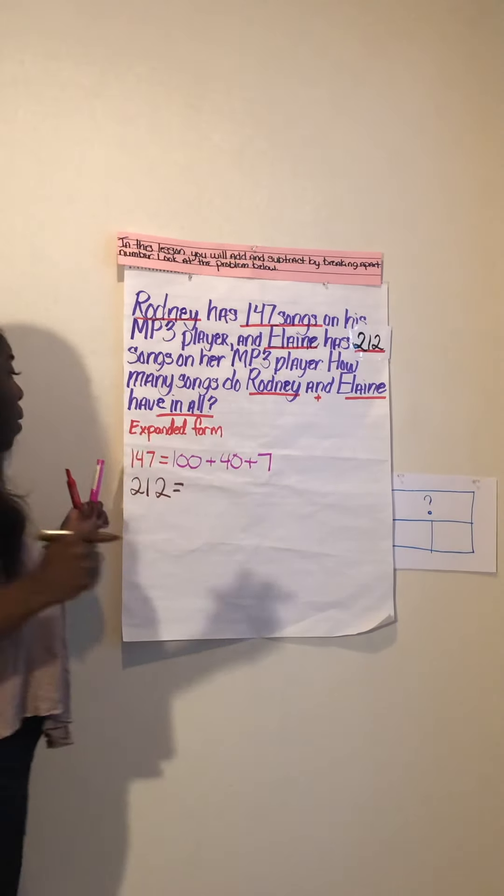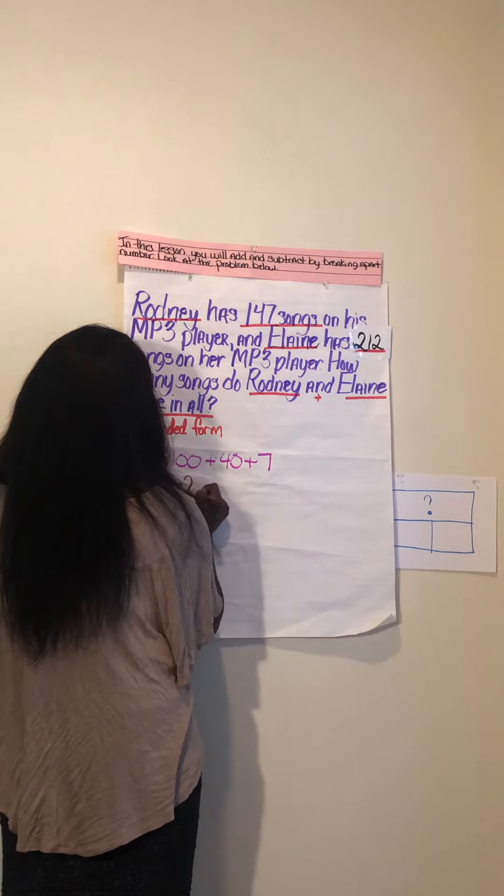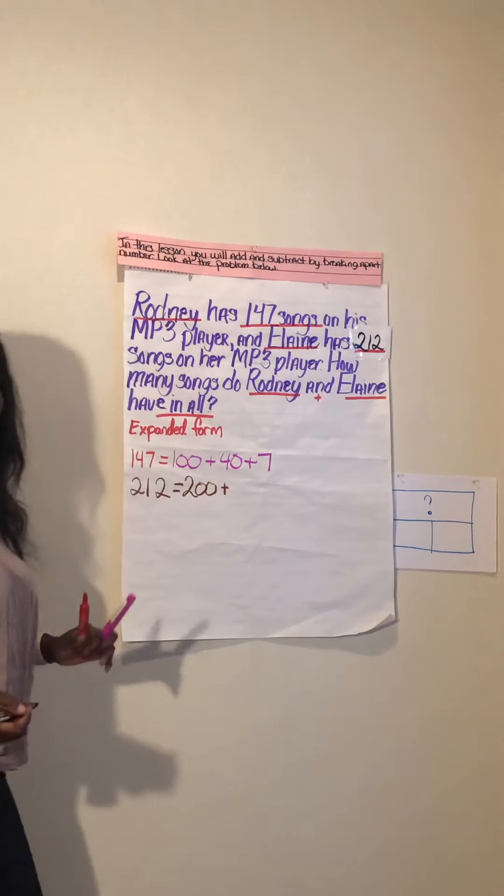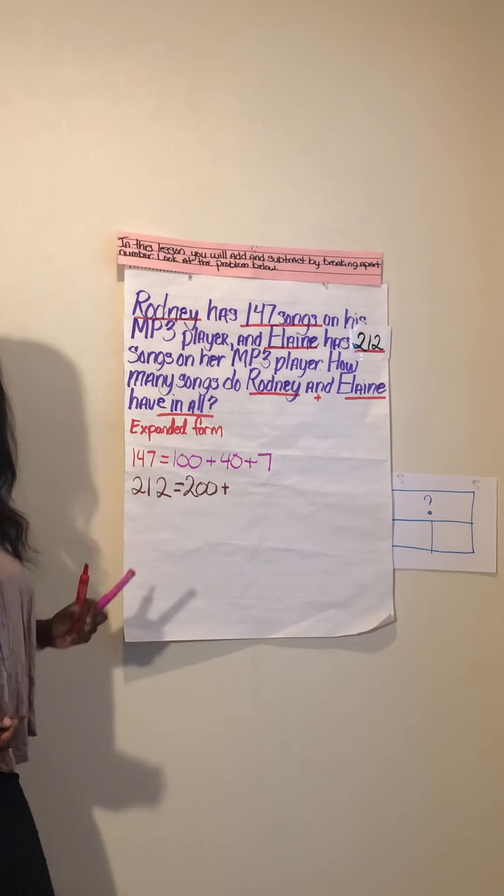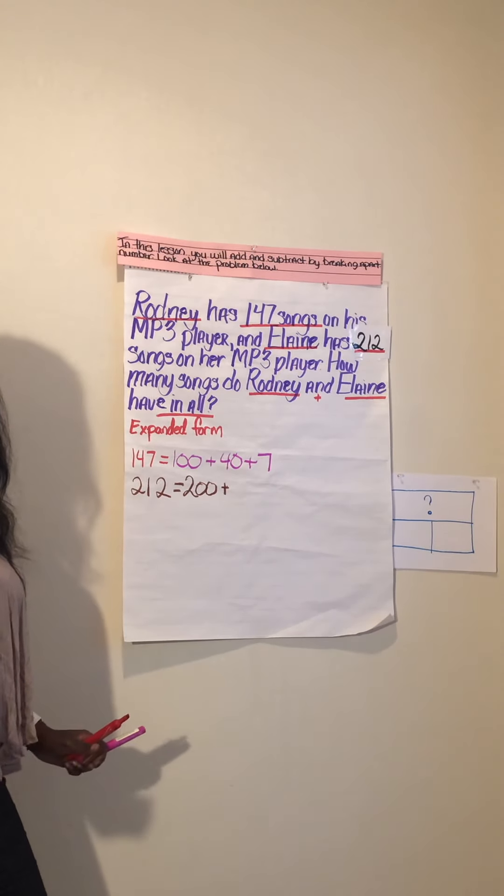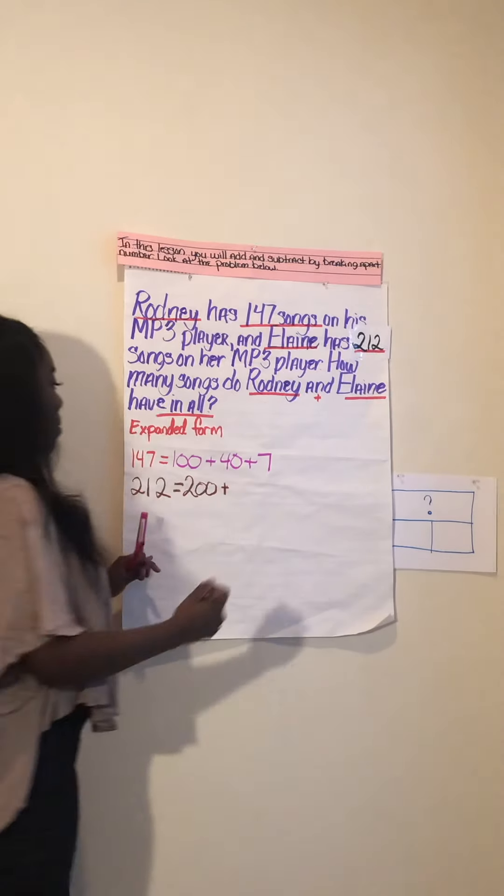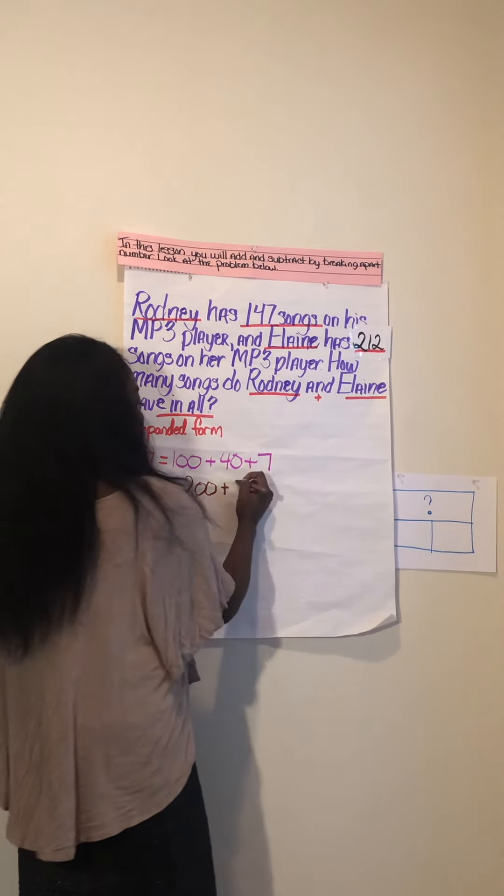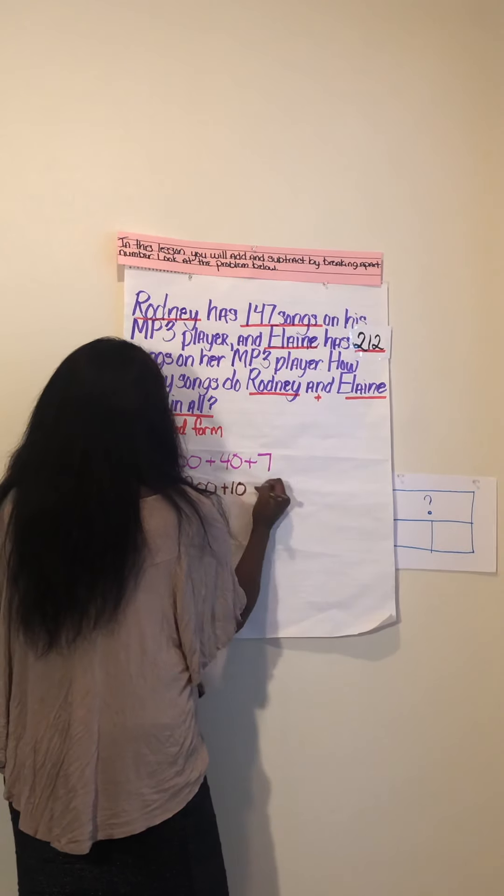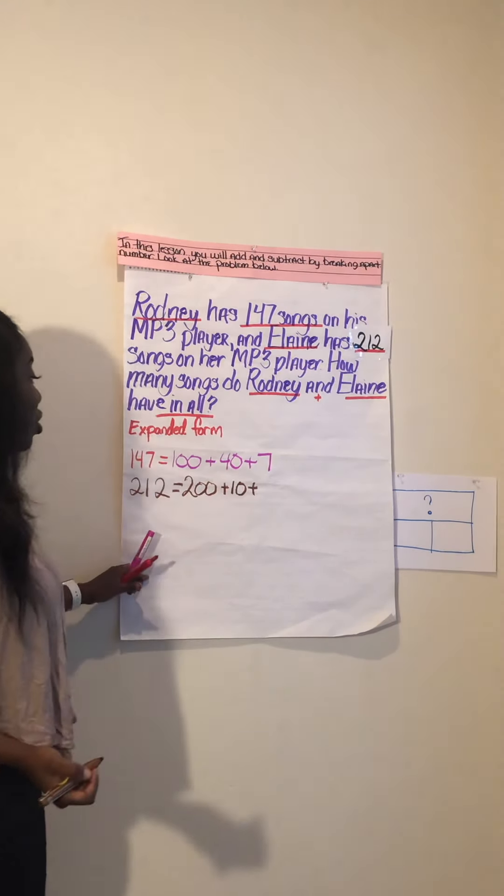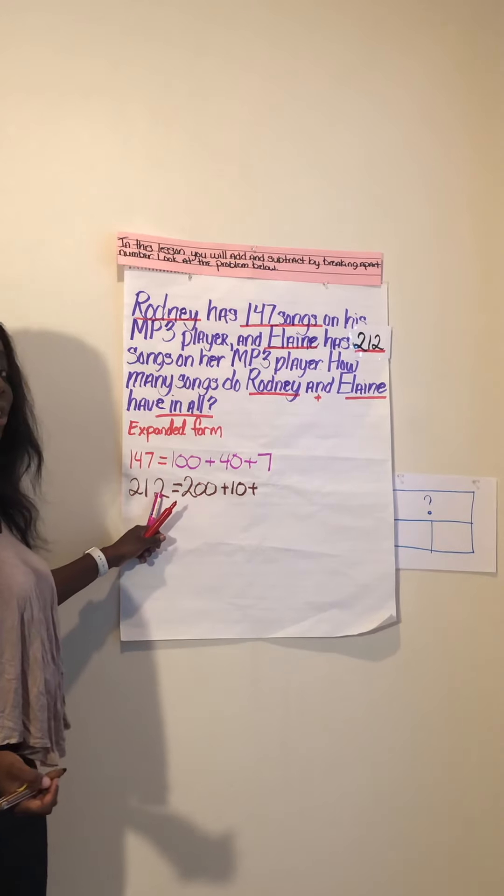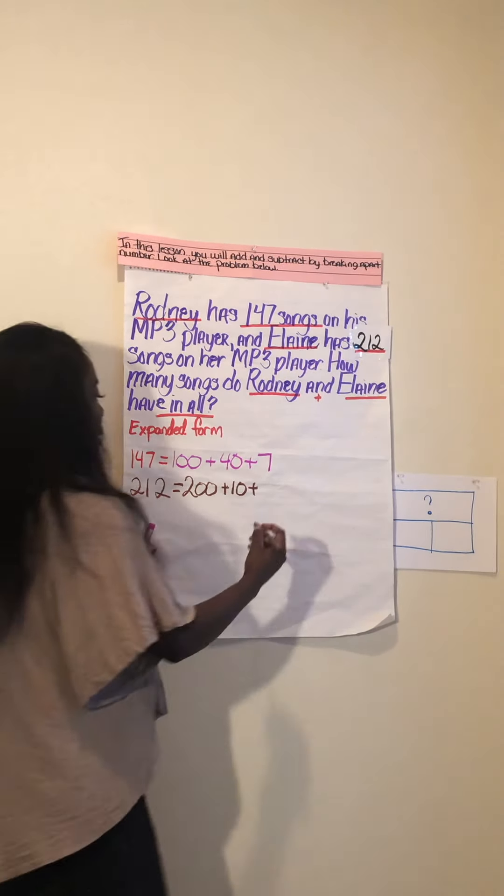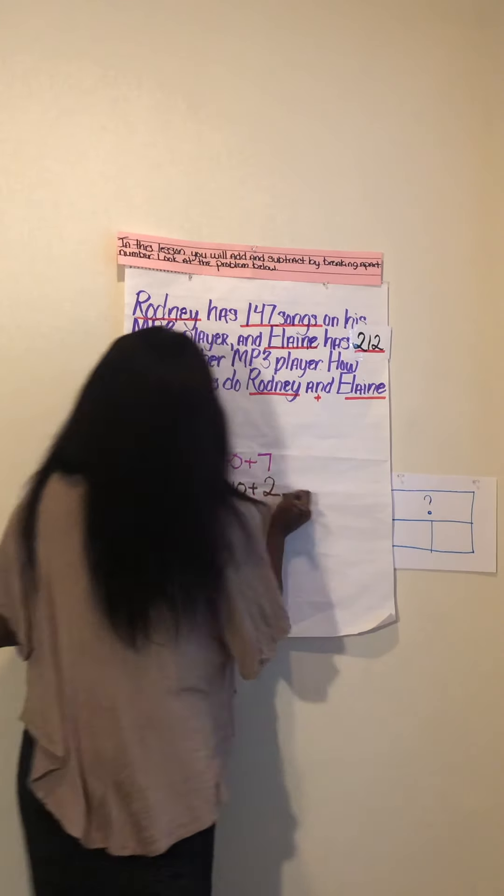The next unit we're going to break apart is Elaine's units. Elaine has 212 songs. When we break apart 212, our 200 goes on its own. If you said 10, because there's a 1 in the 10 spot, you're correct, so I'm going to put plus 10. Next I'm going to add my last unit which is in the ones place - in this number we have 2 ones.